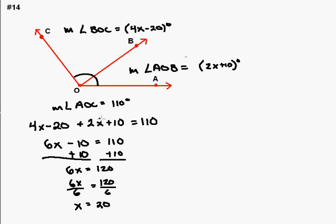Alright, so if I wind up plugging this 20 in for x in 4x minus 20, this is going to give COB an angle measure. Let's see, 4 times 20 is 80 minus 20, so that should be 60 degrees. 2 times 20 is 40, 40 plus 10 is 50, so that should be 50 degrees.